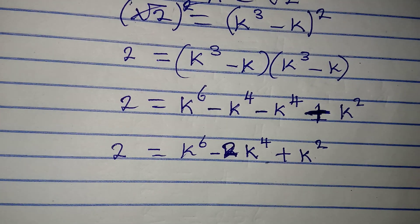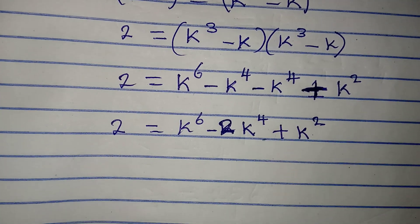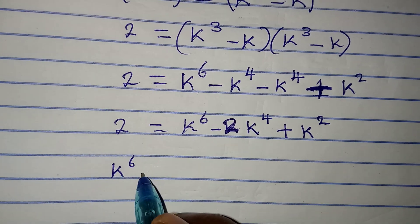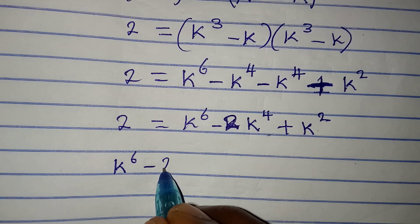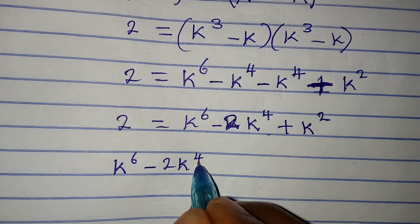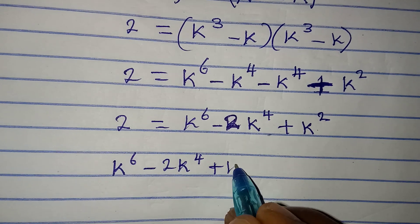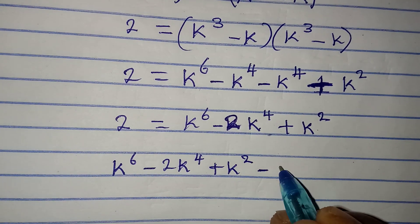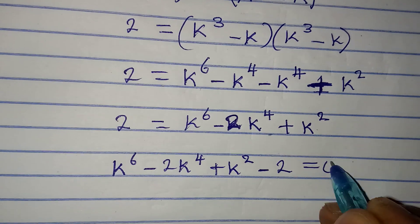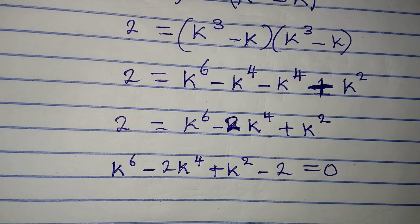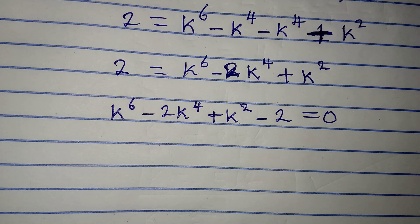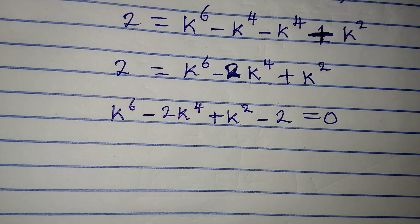Now let's rearrange this. We have k⁶ minus 2k⁴ plus k² minus 2 equals 0, with everything on one side. So now what do we do from here?